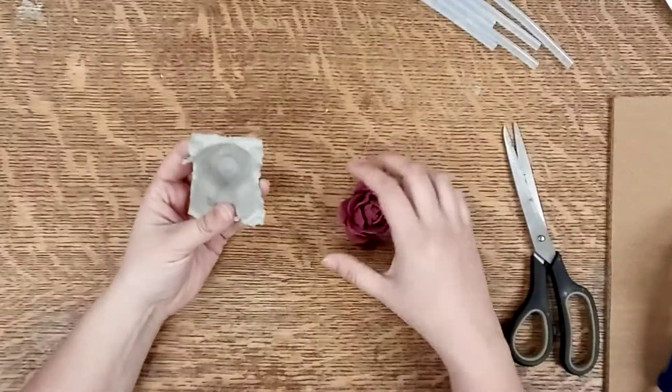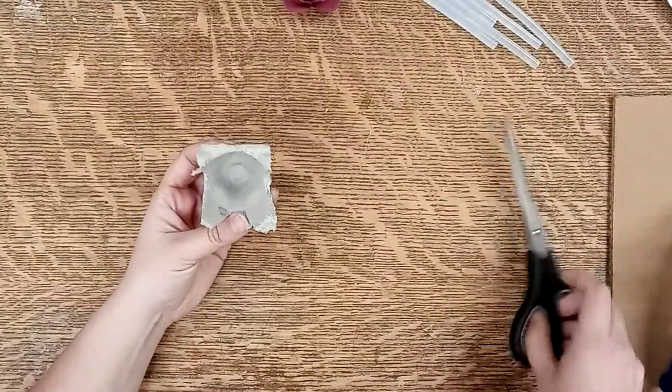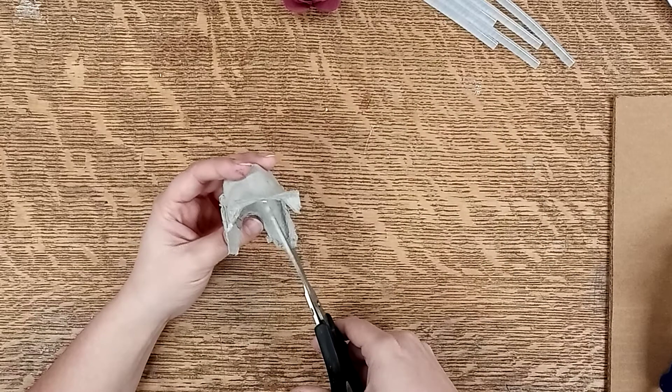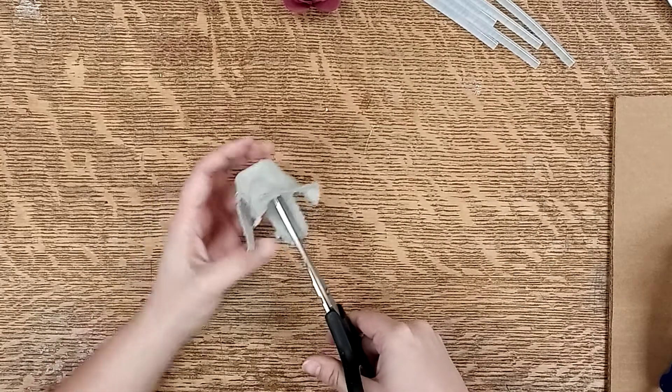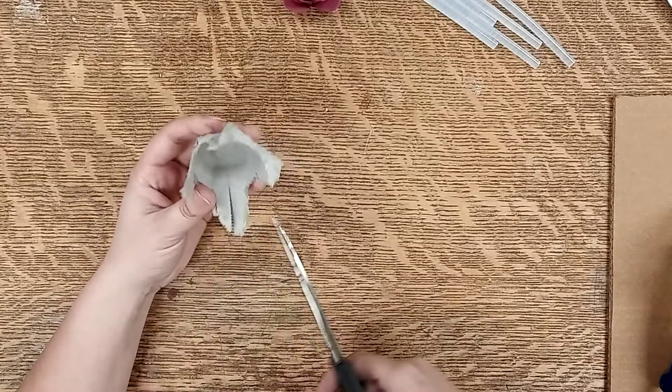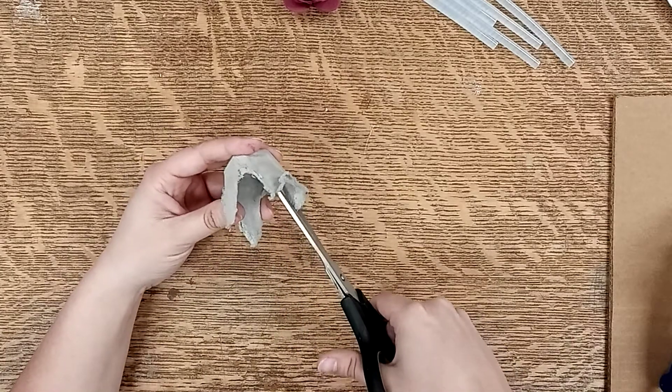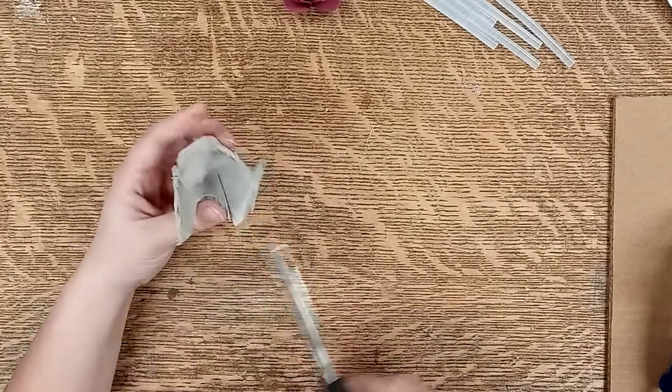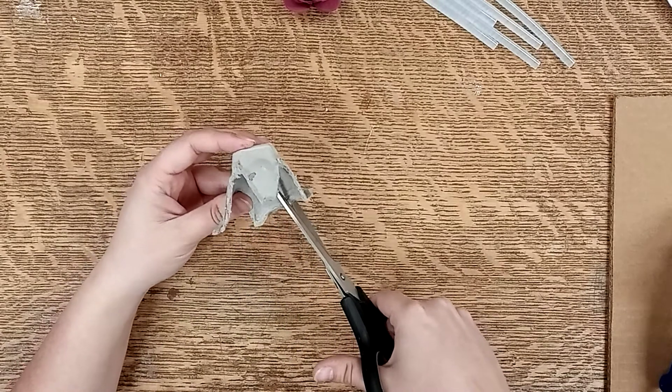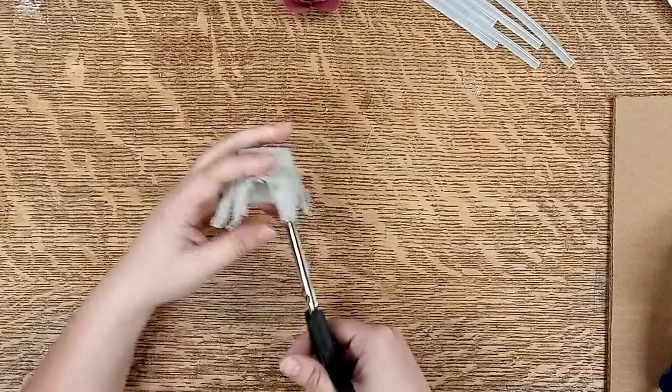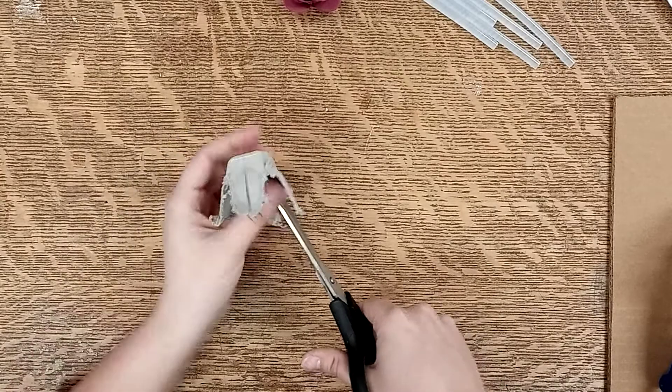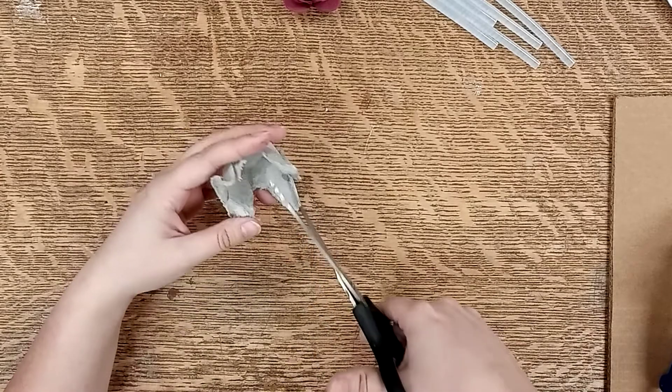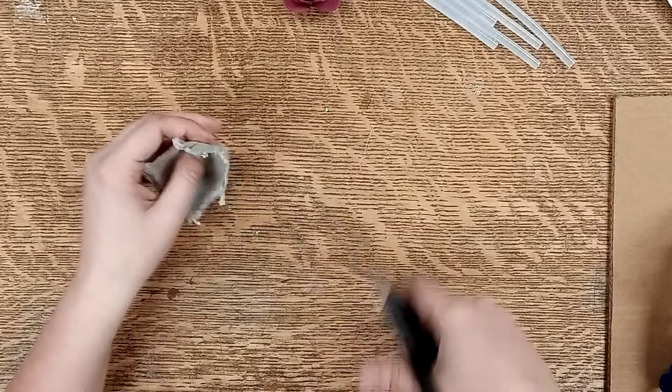With your egg cup you need to cut five petals into each egg cup. So you just take your scissors and cut along here until you have roughly five equal petals like so.